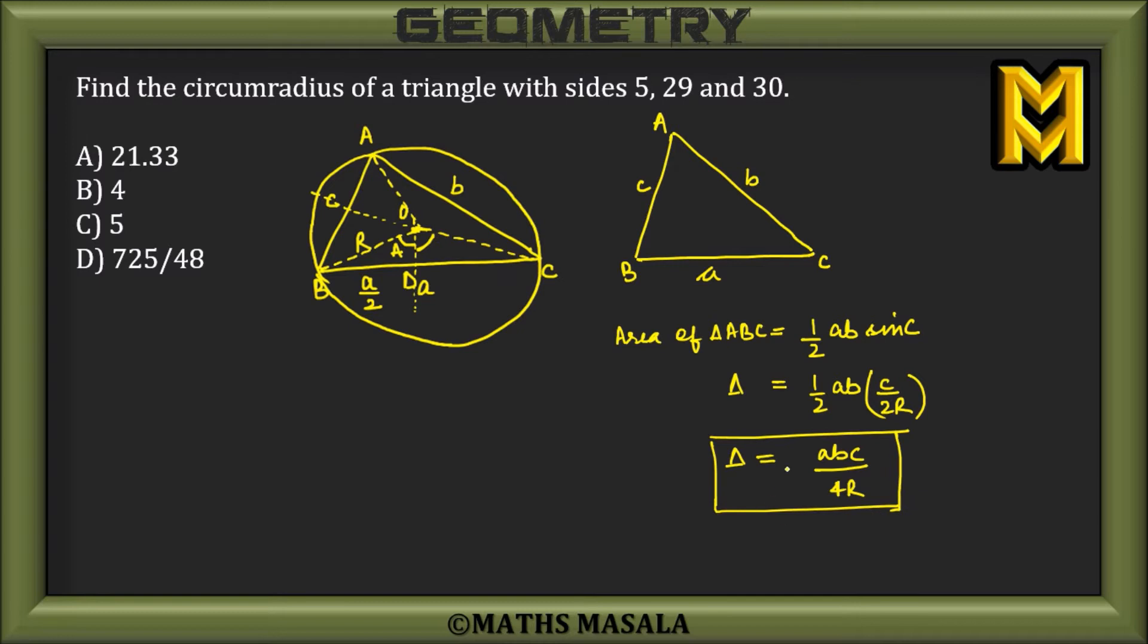given as the product of three sides divided by four times the circumradius. Or the general formula for evaluating the circumradius would be R = abc/4Δ. Now, in the given question, a, b, c are 5, 29, and 30.